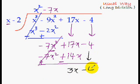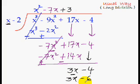So this is our new dividend. And once again we repeat the same process again. That is divide the first term of this new dividend with the first term of the divisor. So 3x divided by this x is 3. So we put positive 3 there. Now multiply this 3 with all the terms of the divisor. 3 times x is 3x, and 3 times -2 is -6.